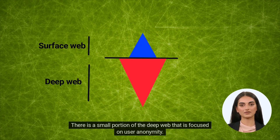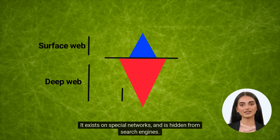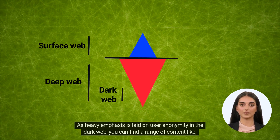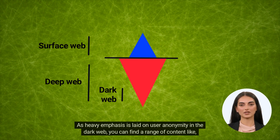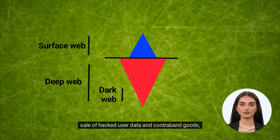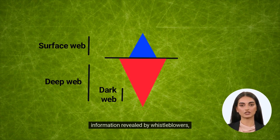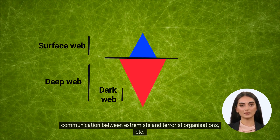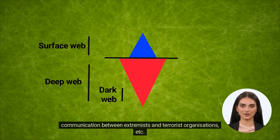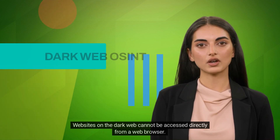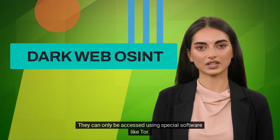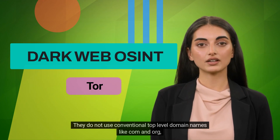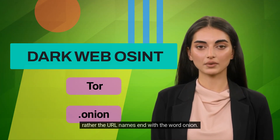There is a small portion of the Deep Web that is focused on user anonymity. It exists on special networks and is hidden from search engines. It is referred to as the Dark Web. As heavy emphasis is laid on user anonymity in the Dark Web, you can find a range of content like sale of hacked user data and contraband goods, information revealed by whistleblowers, malicious software, sale of firearms and weapons, communication between extremists and terrorist organizations, etc. Websites on the Dark Web cannot be accessed directly from a web browser. They can only be accessed using special software like Tor. They do not use conventional top-level domain names like .com and .org. Rather, the URL names end with the word onion.